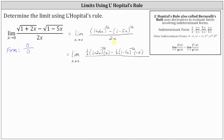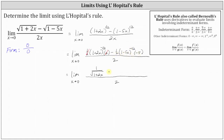We differentiate the denominator of two x, which gives two. Now let's simplify. In the numerator, one half times two equals one, so we rewrite the quantity one plus two x to the negative one half as one divided by the square root of the quantity one plus two x. Then we have minus one half times the quantity one minus five x to the negative one half times negative five, which simplifies to plus five divided by the product of two and the square root of the quantity one minus five x.